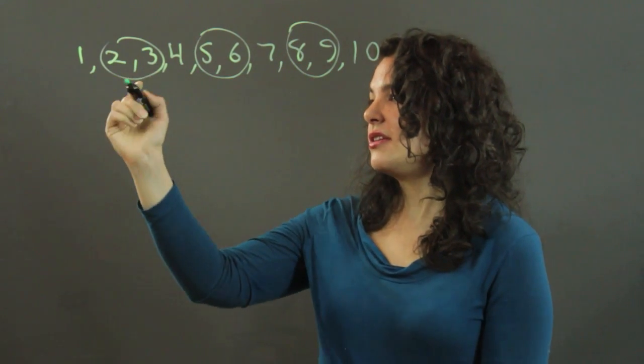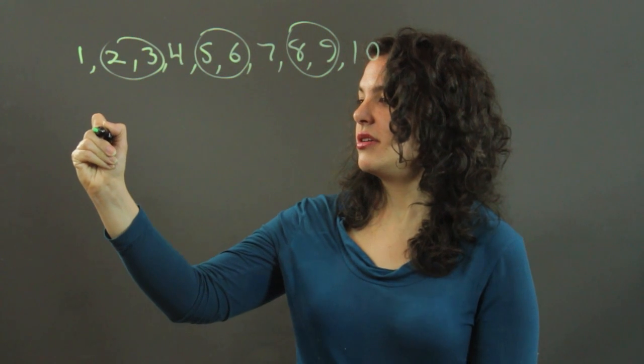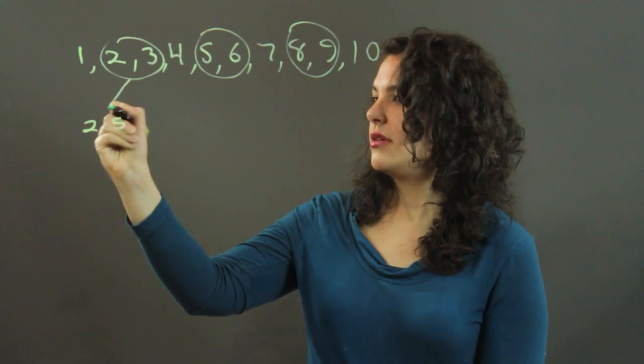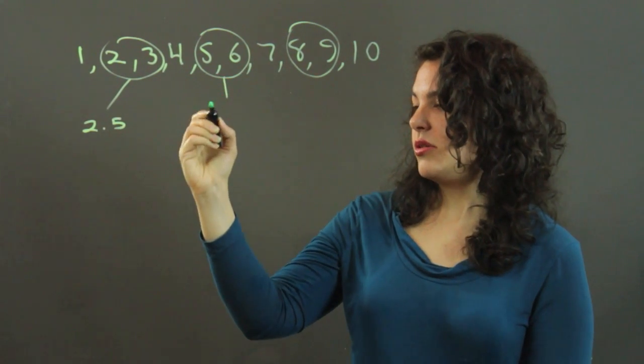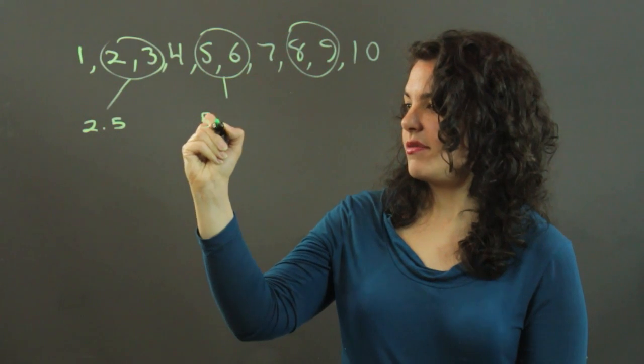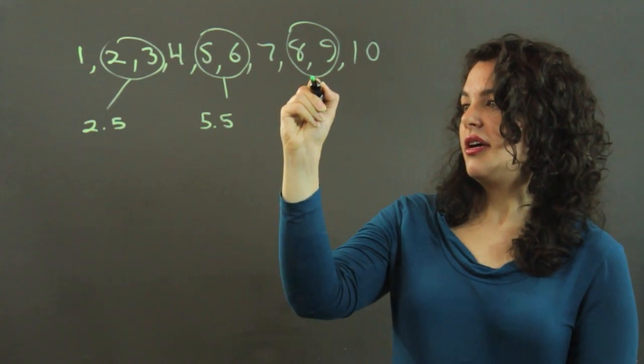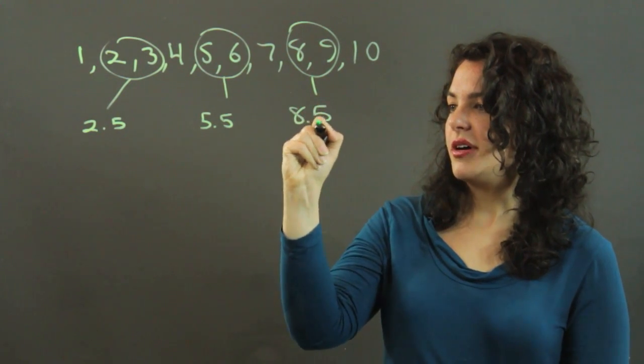So the lower quartile is the average of two and three, which is 2.5. The middle quartile is 5.5. And our upper quartile is 8.5.